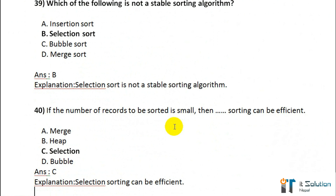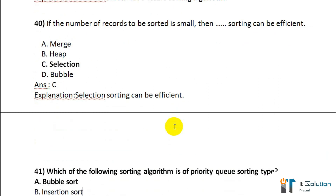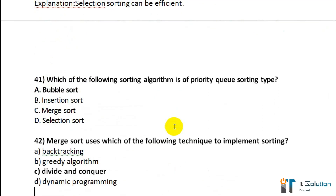Question number 40: If the number of records to be sorted is small, then data sorting can be efficient — its correct answer is option C — selection sort. Question number 41: Which of the following sorting algorithms is a priority queue sorting type? The correct answer is bubble sort.